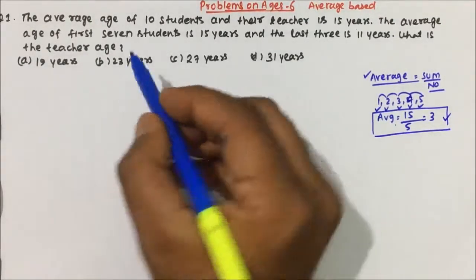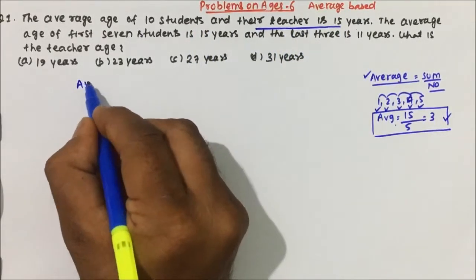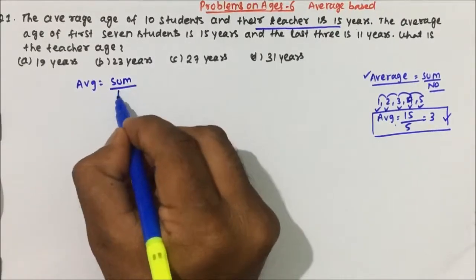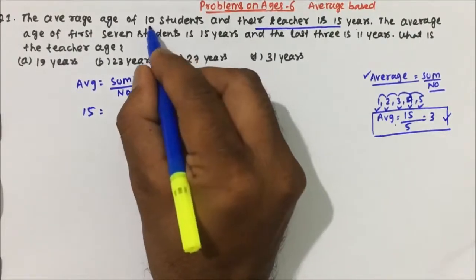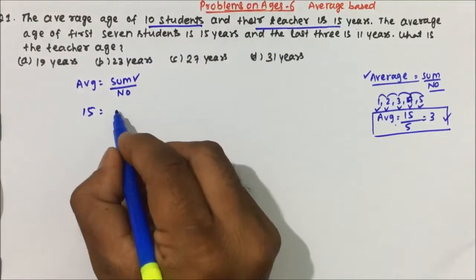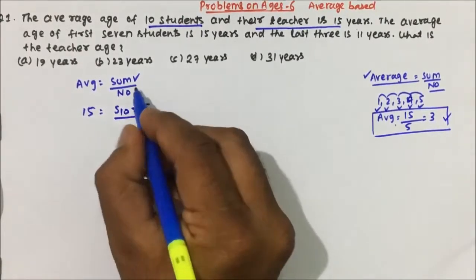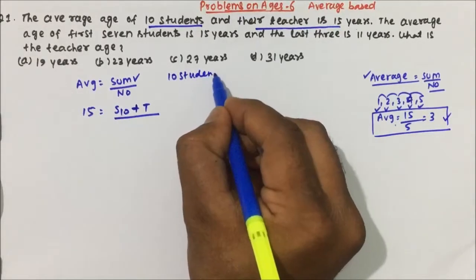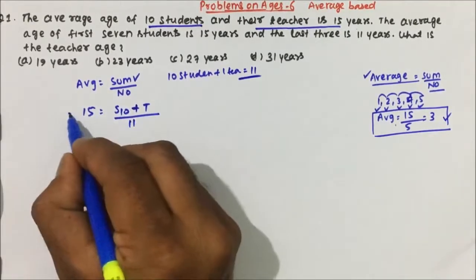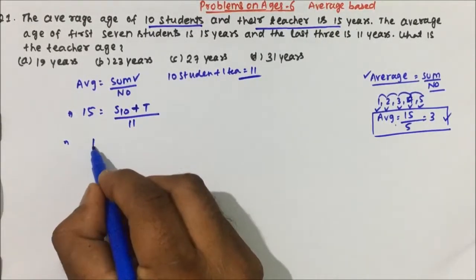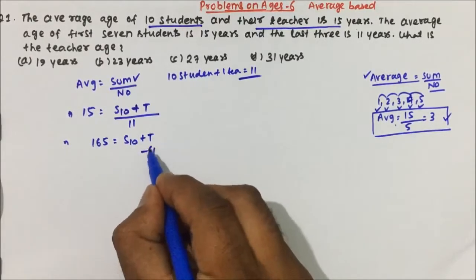Now, the average age of 10 students and the teacher is 15 years. So average = sum / number. The average is 15, and the sum is the ages of 10 students plus the teacher's age. The total number of persons is 10 students plus 1 teacher = 11. So 15 × 11 = 165, meaning the sum of 10 students' ages plus teacher's age equals 165. This is our first equation.